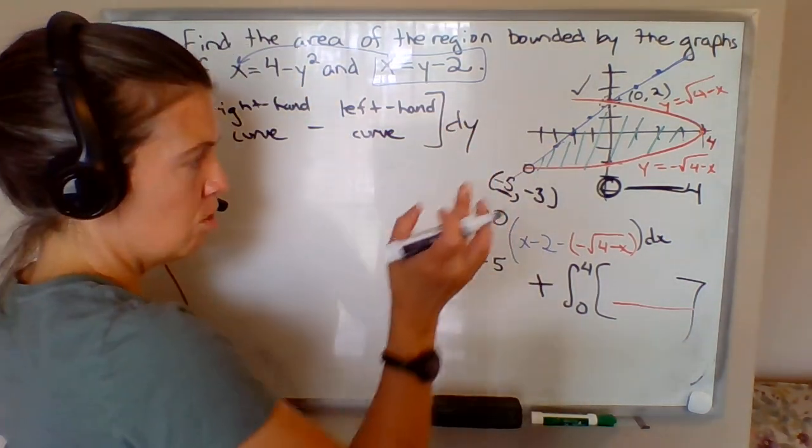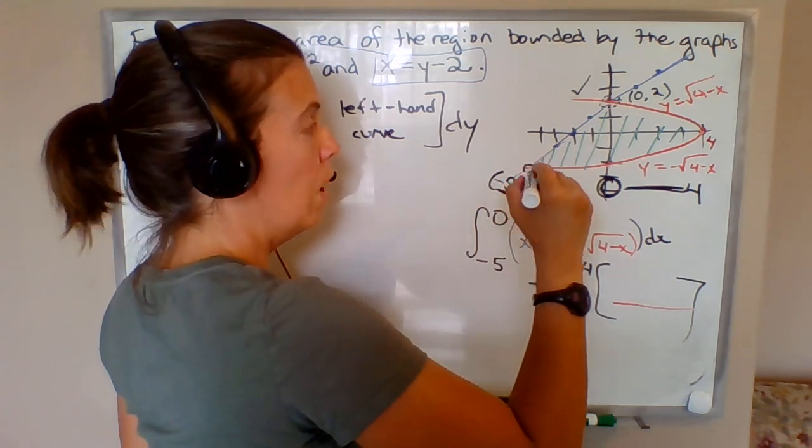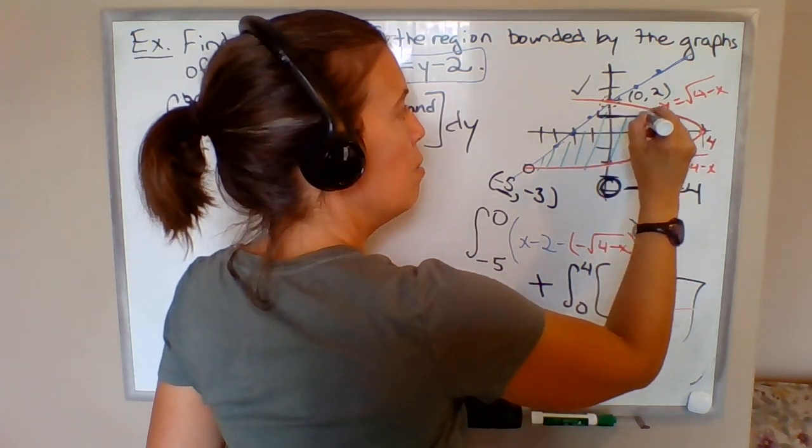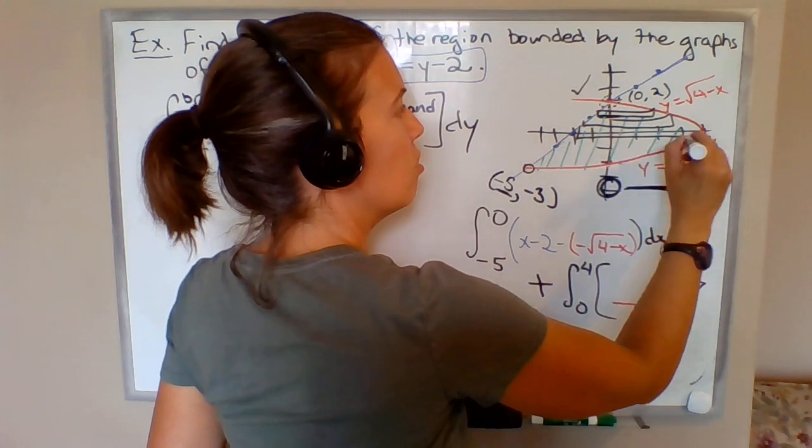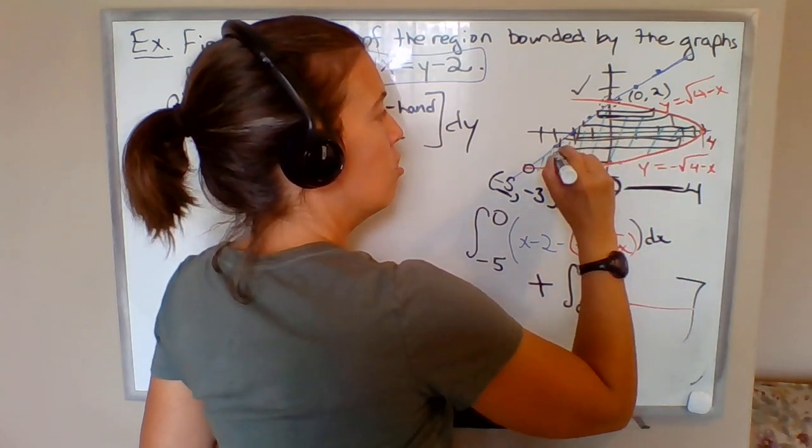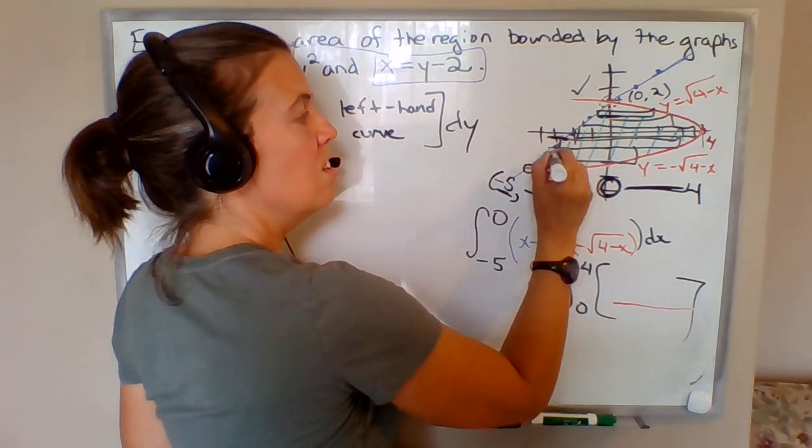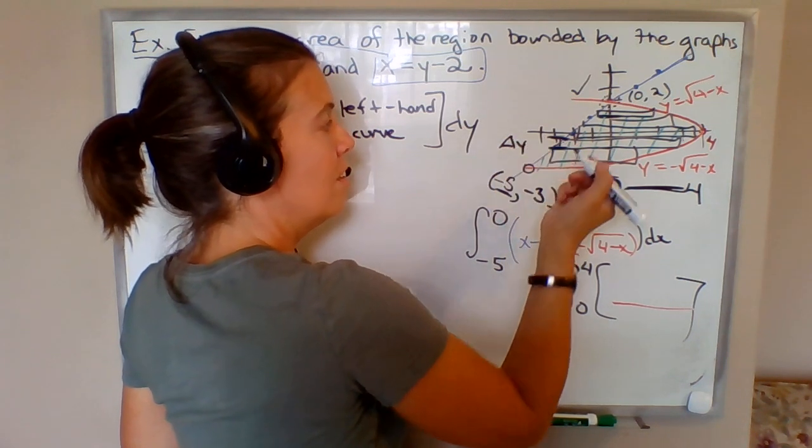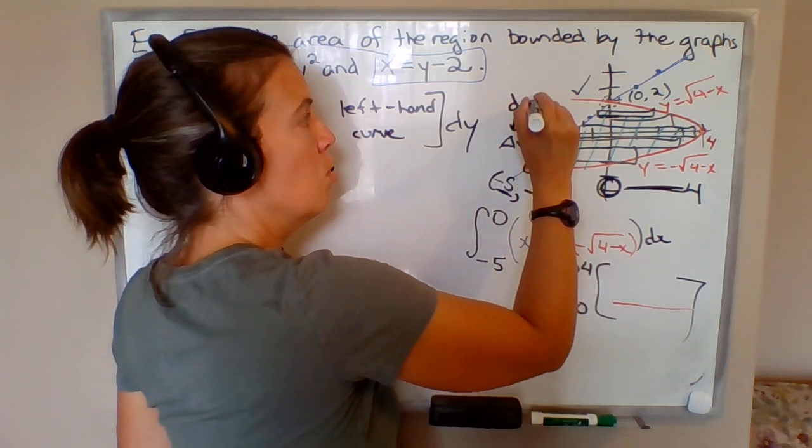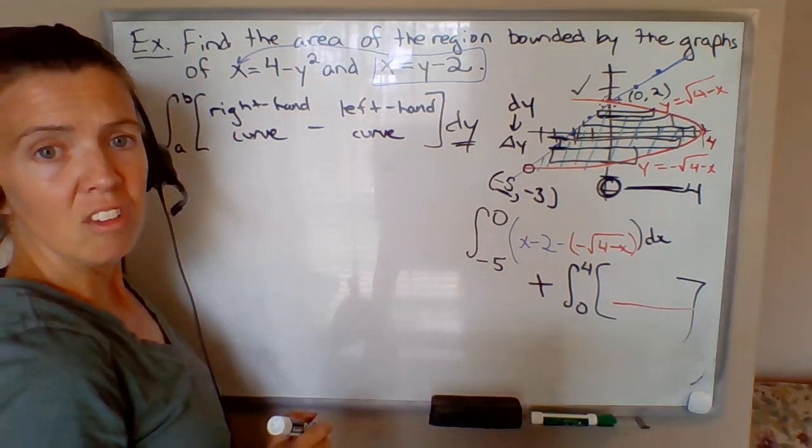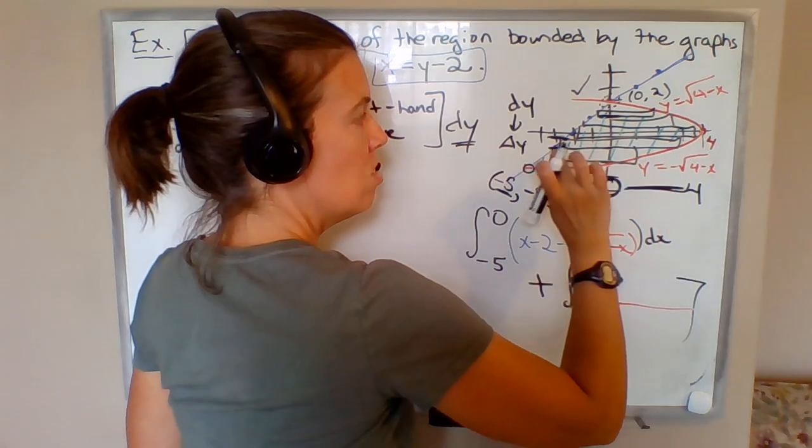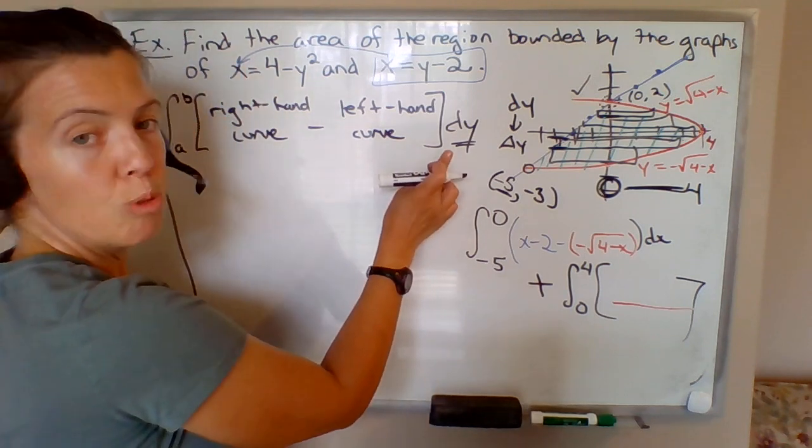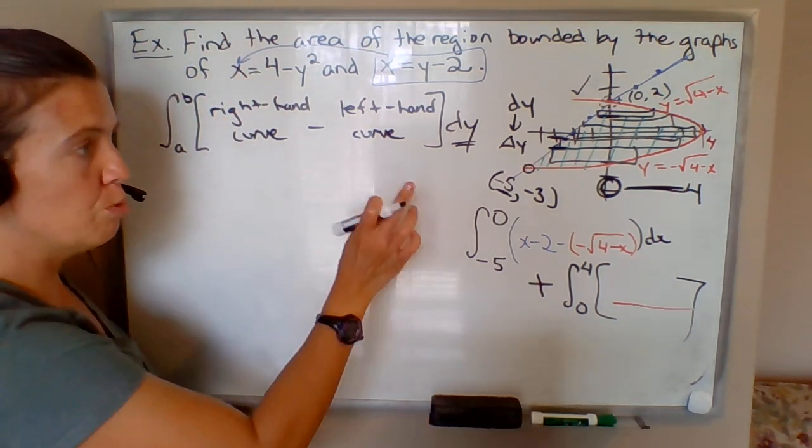Instead of slicing it this way and writing an integral in terms of x, suppose we approximated the area using a bunch of rectangles slicing it this way. Now the width of each of these rectangles is an increment of y. So this is going to be an integral in terms of y—that's why I put dy here instead of dx. Whenever you are slicing your region horizontally, so you're looking at it as right minus left instead of top minus bottom, you need to write it as an integral in terms of y, which is what we should do here.